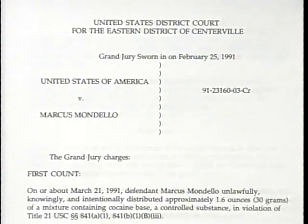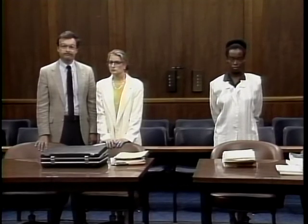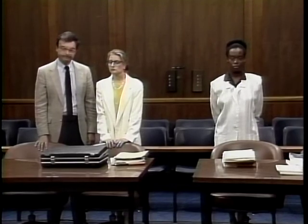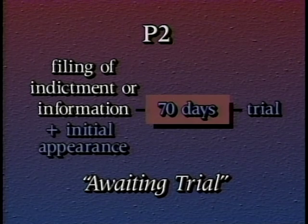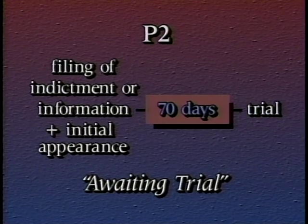Under the Act, both the filing of an indictment or information and an initial appearance in court are required before P-2's 70-day time limit is called into play. P-2's 70-day limit starts to run only after the latter of these two events — from the filing of the indictment or information or from the date of the defendant's first appearance, whichever comes last, to the start of trial. If the defendant is not brought to trial within P-2's 70-day time limit, the case may be dismissed.